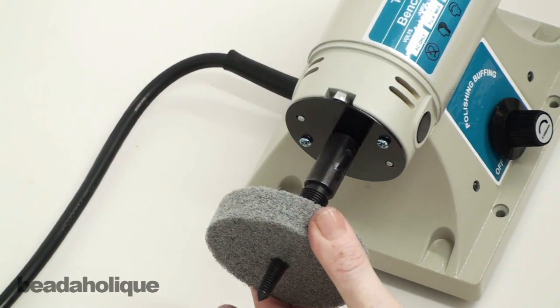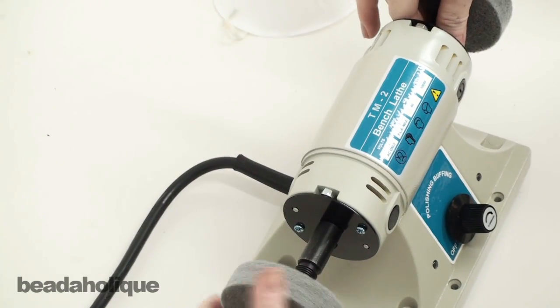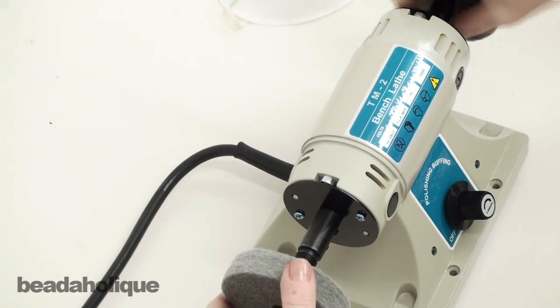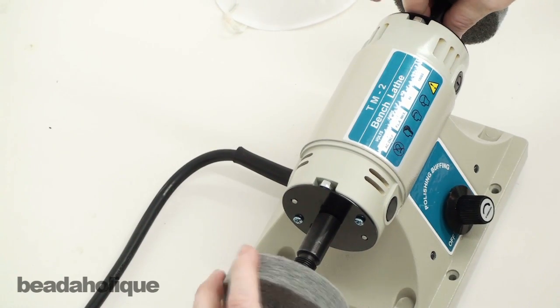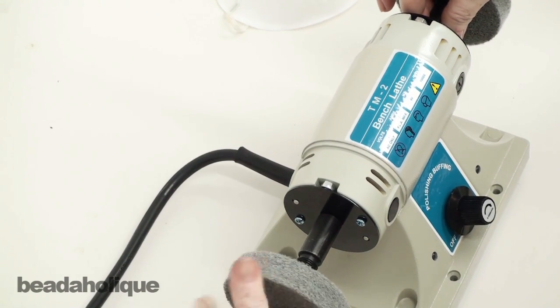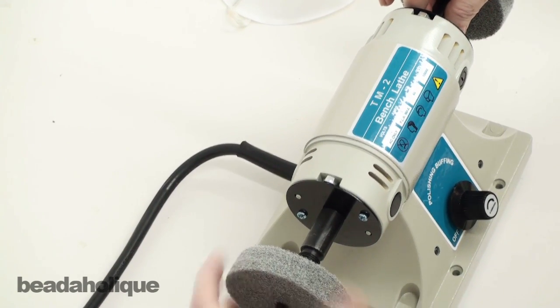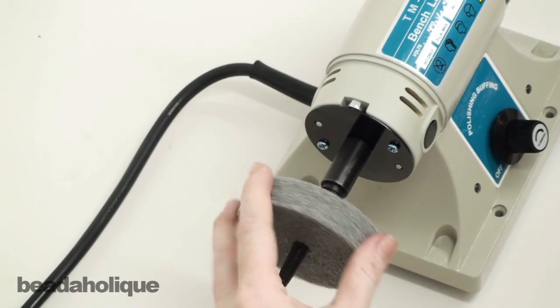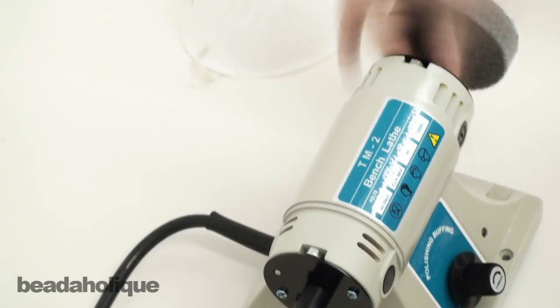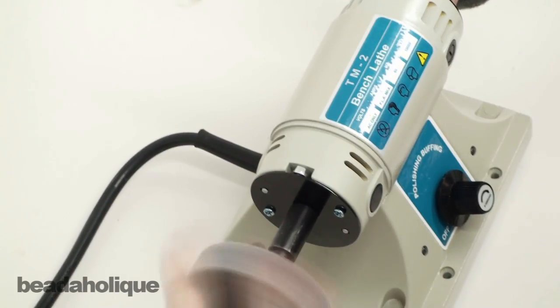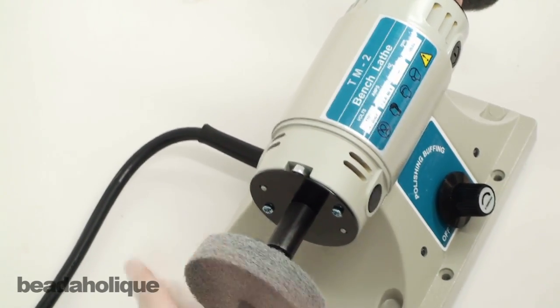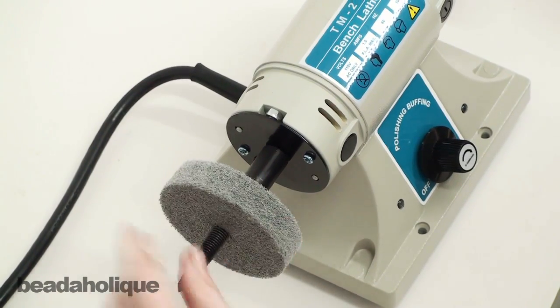You can either twist the motor shaft or you can twist the actual wheel. Those are secure—they're not going anywhere.